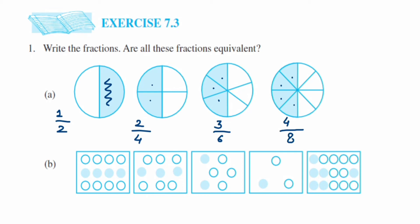To find whether these fractions are equivalent, I'm going to bring all fractions to their reduced or simplest form — I cancel the numbers until I cannot cancel further. One upon two is already in simplest form. Two upon four: two ones are two, two twos are four, so I get one upon two. Three upon six: three ones are three, three twos are six, so this is again one upon two.